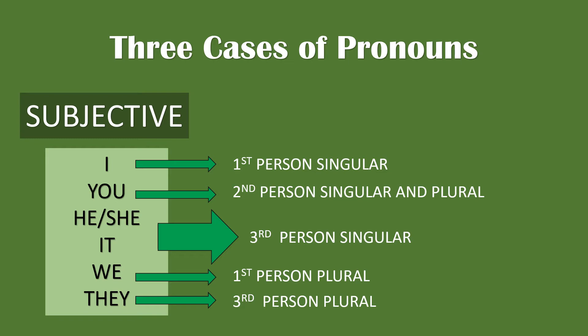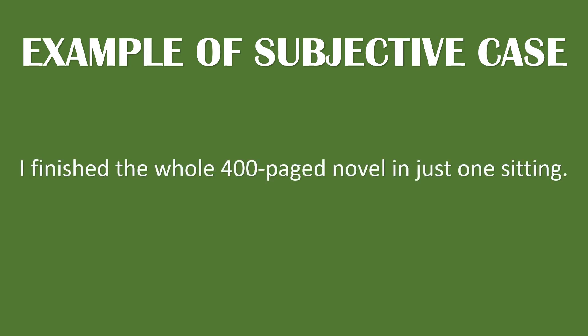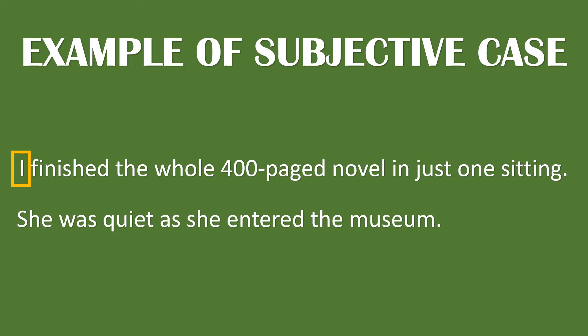The third-person pronouns include they, he, him — but in this case, we're going to focus on the subjective case, so we only use it and they. Let's have an example where the subjective case of pronoun is applied. 'I finished the whole 400-page novel in just one sitting.' The pronoun here is I, which serves as the subject of the sentence, so we use the nominative or subjective case. 'She was quiet as she entered the museum.' The pronoun here is 'she' in subjective case because it serves as the subject of the sentence.